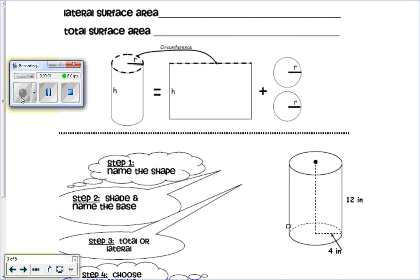All right, so we're going to find lateral and total surface area of a cylinder and let's go ahead and look on your reference material.